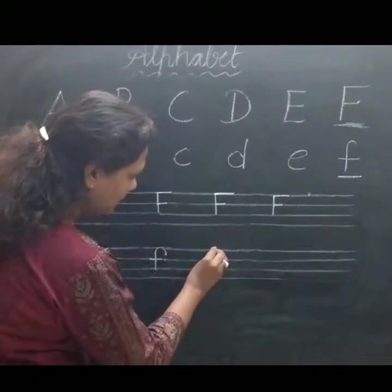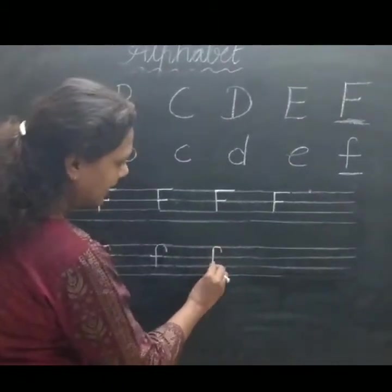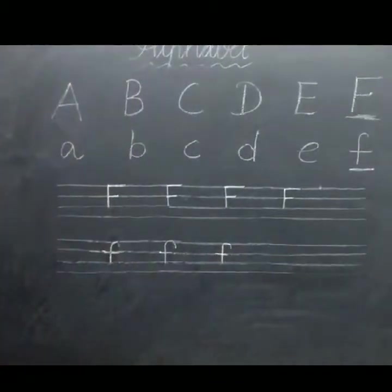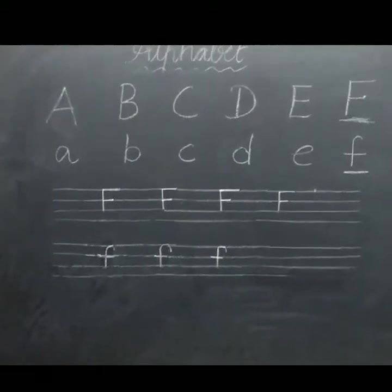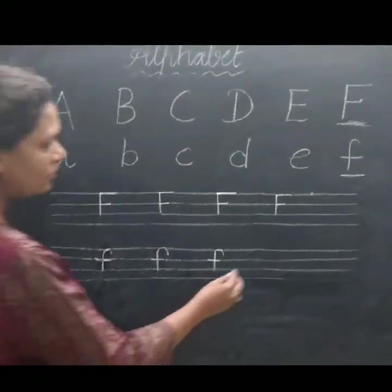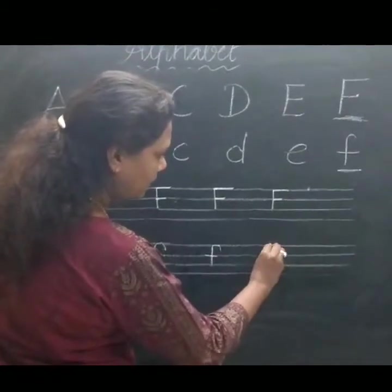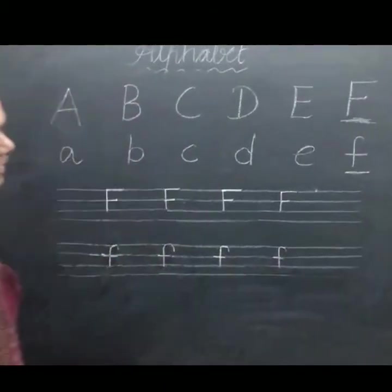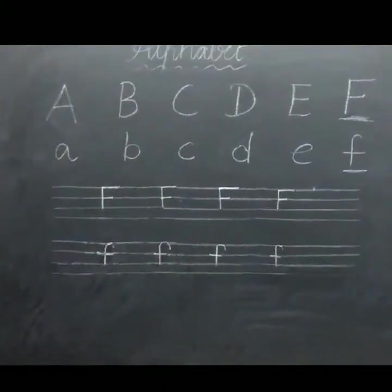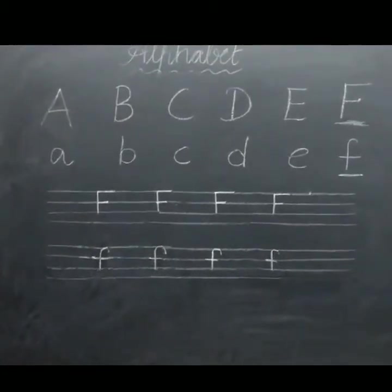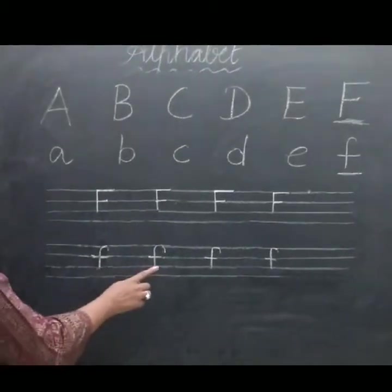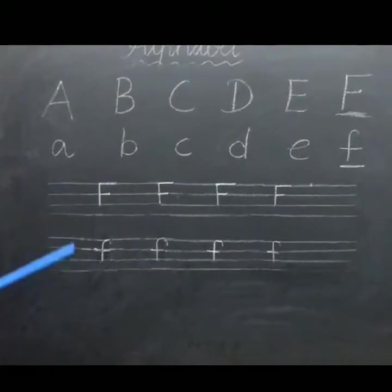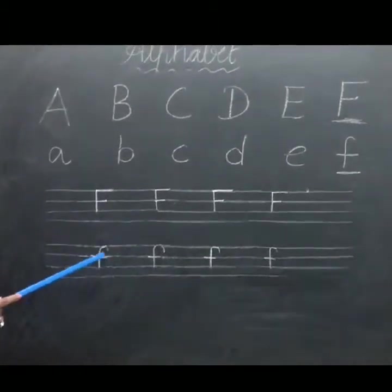Again — one small curve joining standing line, and one small sleeping line. Mix. Small letter F. It's very simple to write. This is called baby F, and this is called mama F. Capital F, and this is small F. Good job, children.